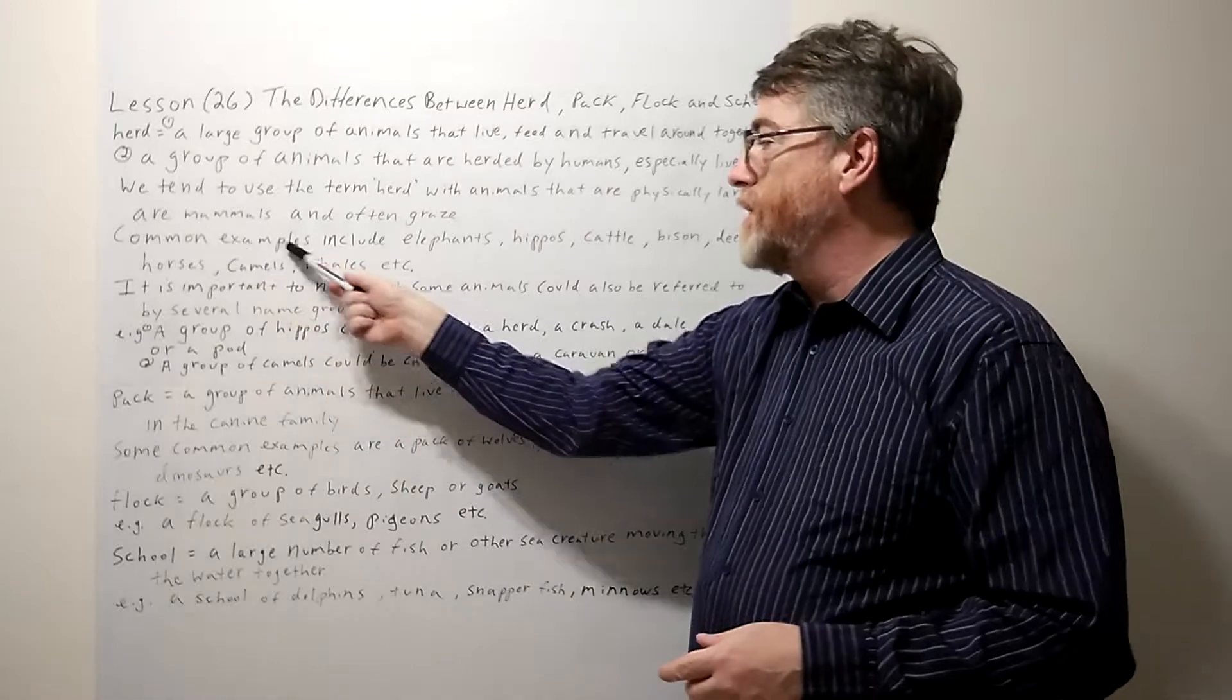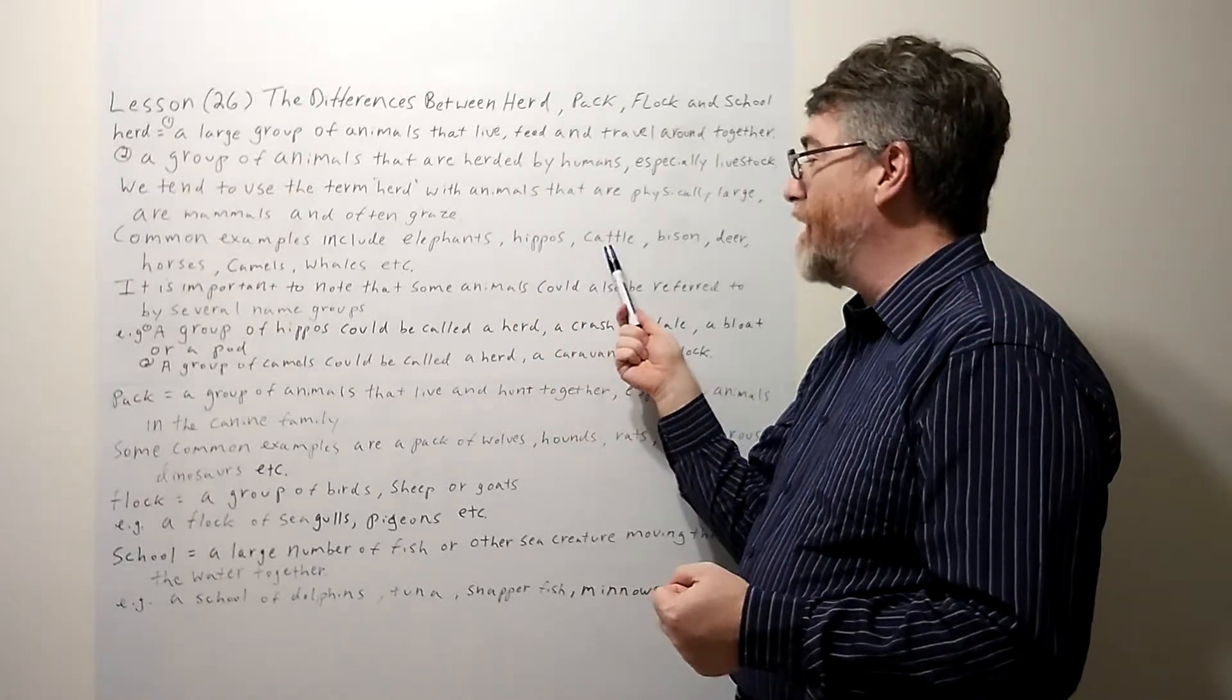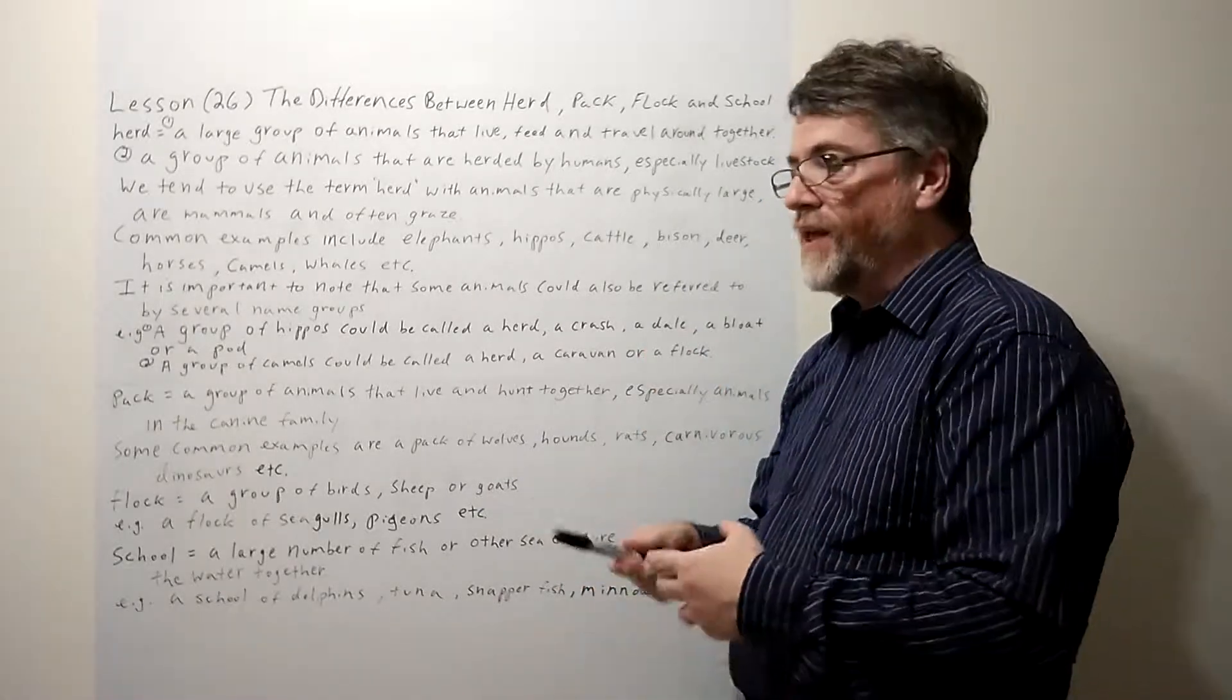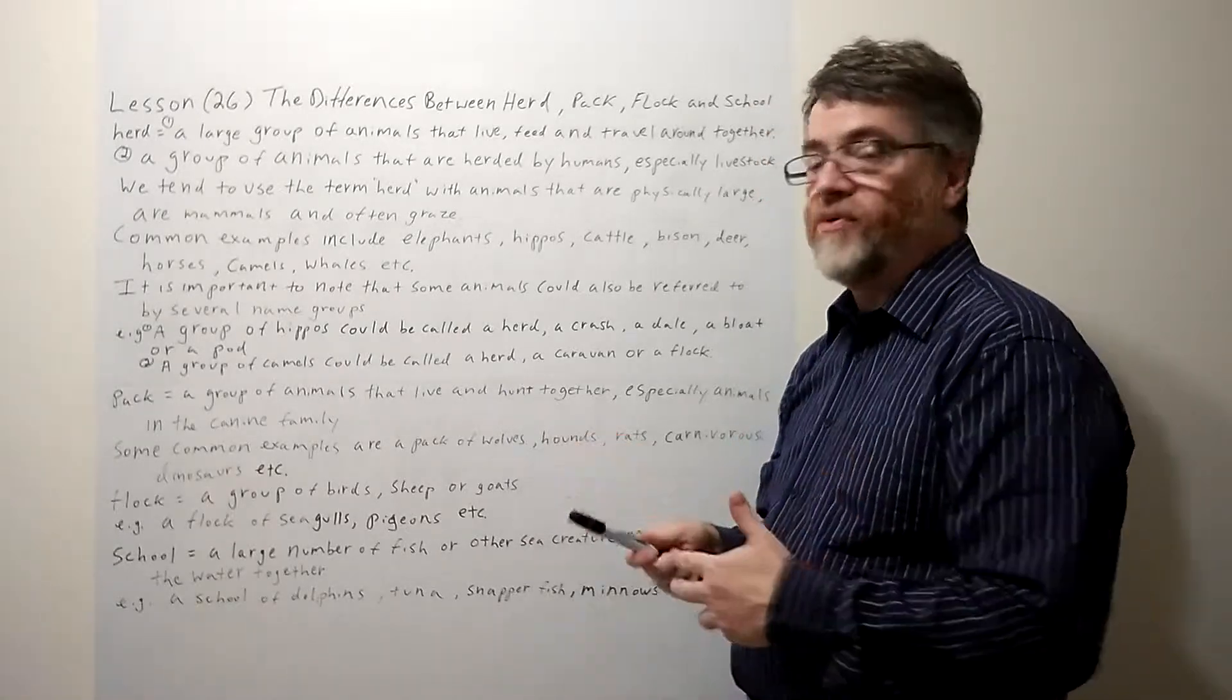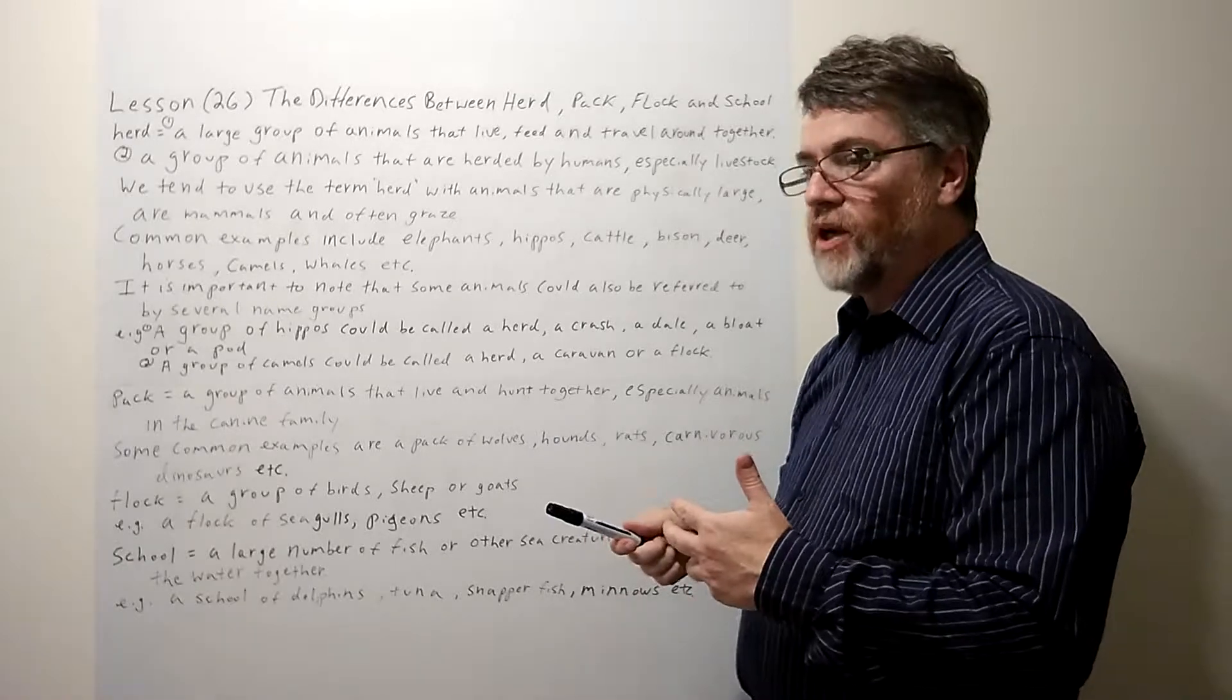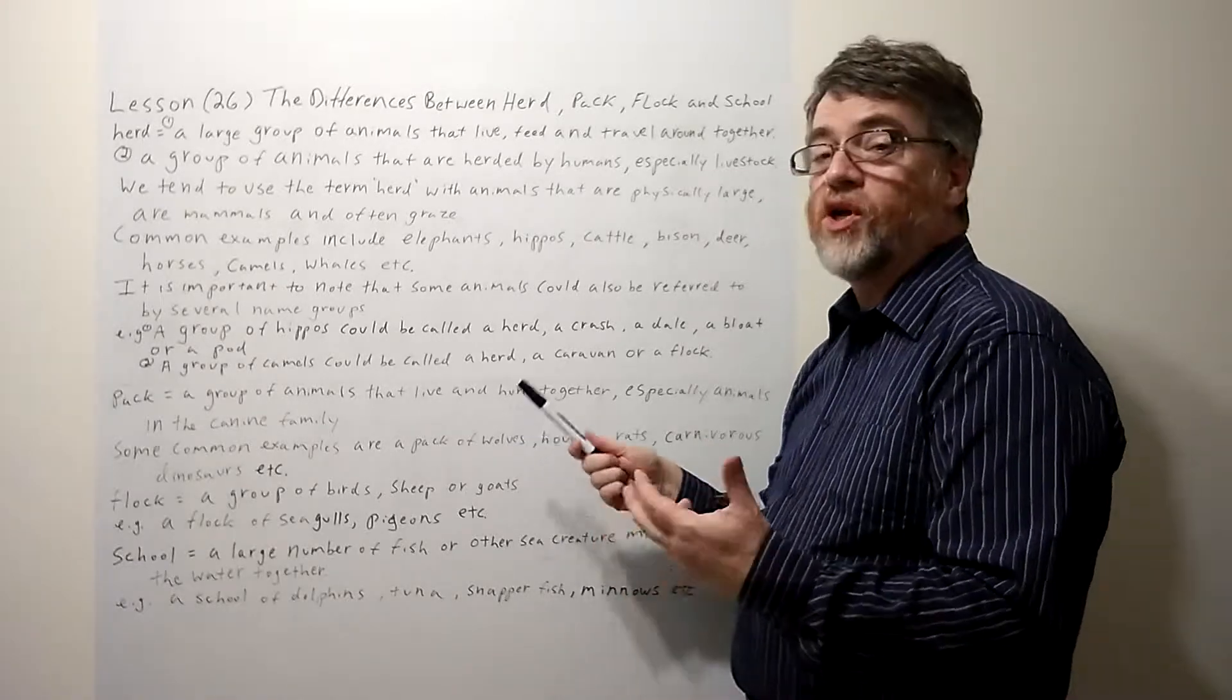Let's look at some of the animals, the most common animals that fall in this group. Common examples include elephants, hippos, cattle—any animals in the cow family, bison, buffaloes, bulls. Deer, especially large deer, or animals that are in the deer family like moose, elk, caribou would probably fall into the herd category.